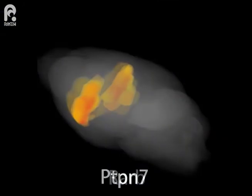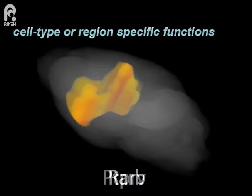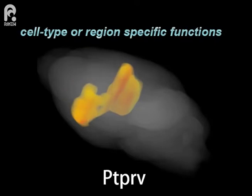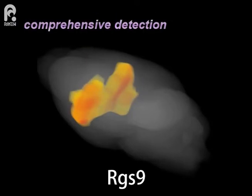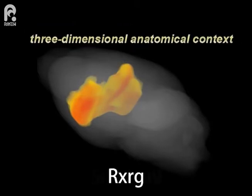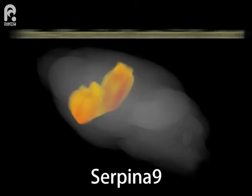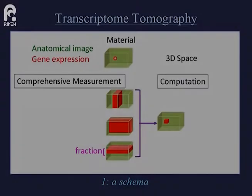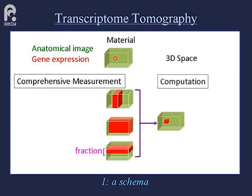The brain structure is extremely complex and strongly related to its function. Activation of specific subsets of genes regulates cell type or region specific functions. For comprehensive detection of gene expression densities in the three-dimensional anatomical context, we invented a mapping technique: transcriptome tomography.